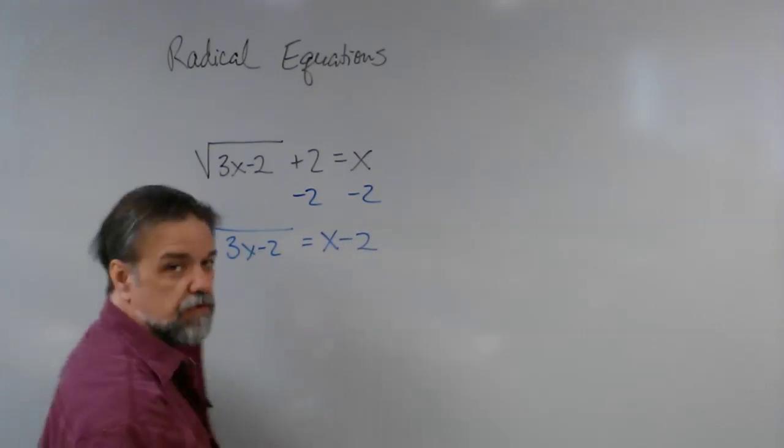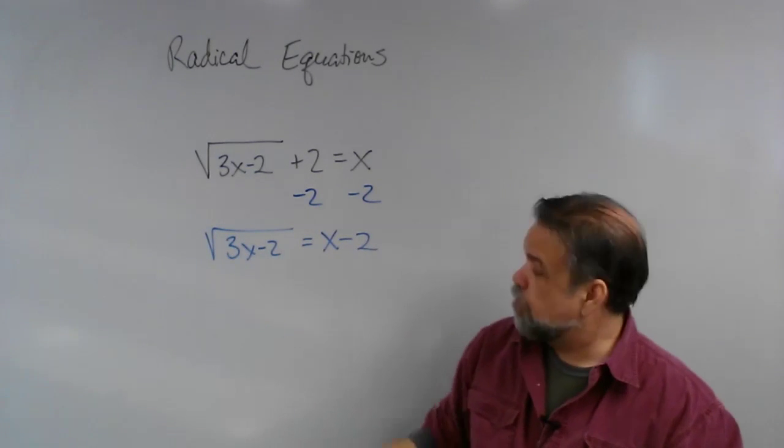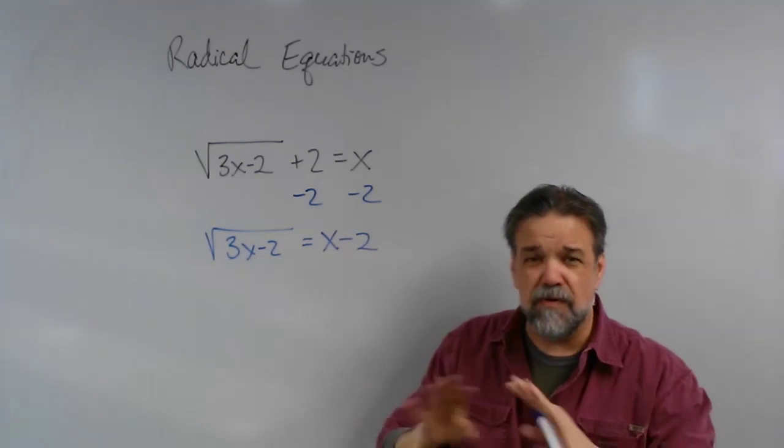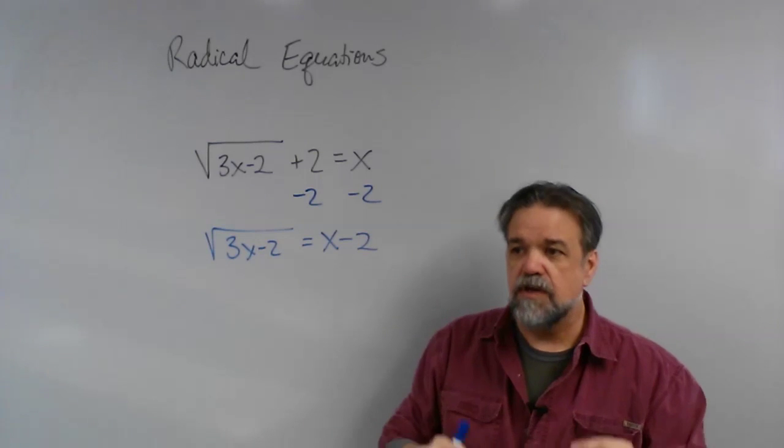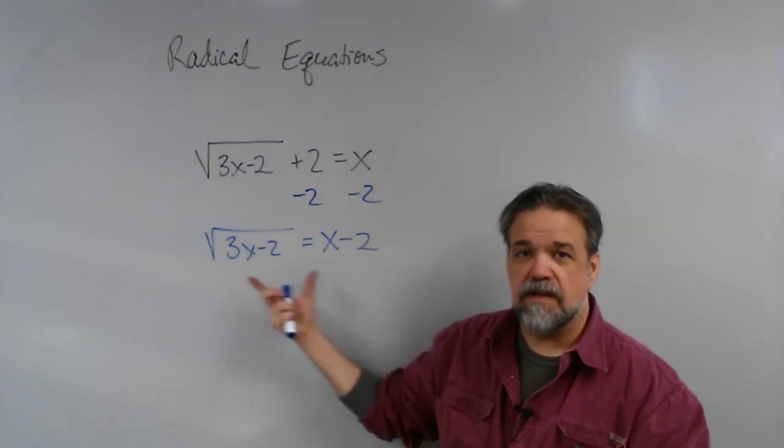That means I'm going to get the square root of 3x minus 2 equals x minus 2. Easy enough. Now I've got the radical by itself and that radical is kind of disturbing me. I want to get rid of it. Well, how do you get rid of a square root? You do the inverse operation, you square it.